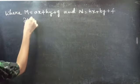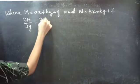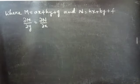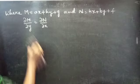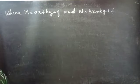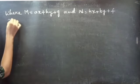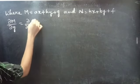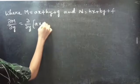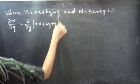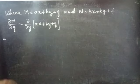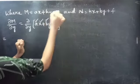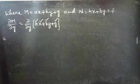If the partial derivative of M with respect to y is equal to the partial derivative of N with respect to x, then we can say that the given differential equation is an exact equation. So firstly, we will find the partial derivative of M with respect to y, which equals dou/dou y of (ax plus hy plus g). Since we are doing partial derivative with respect to y, x, a, h, and g are treated as constants.